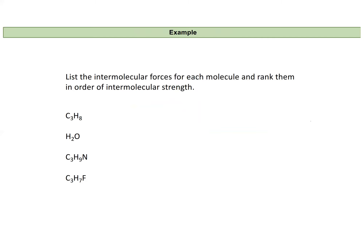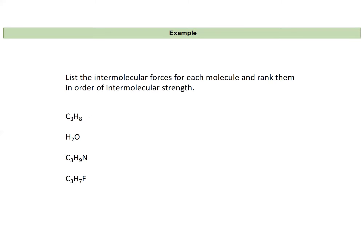Let's look at a list of molecules and rank them in order of intermolecular force strength. For the first molecule, I have carbon and hydrogen — this is propane, C3H8. I only have carbon-carbon or carbon-hydrogen bonds, and these are all nonpolar. So without even building a Lewis dot structure, I know this molecule can only have London dispersion forces. There are no oxygen-hydrogen, nitrogen-hydrogen, or fluorine-hydrogen bonds, so it cannot have hydrogen bonding, and it cannot be polar because there are no polar bonds possible.